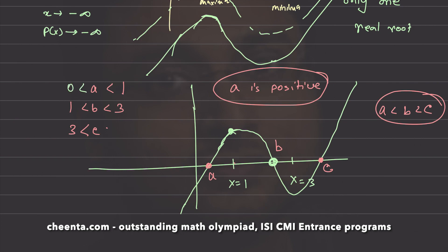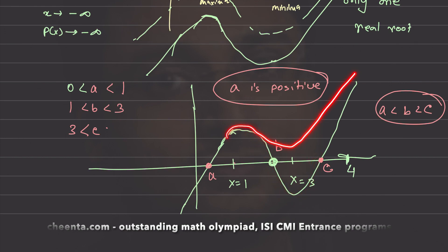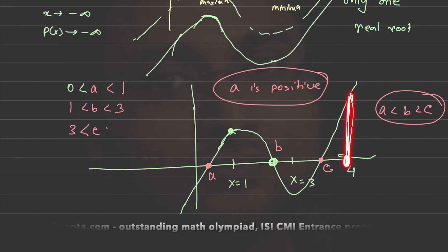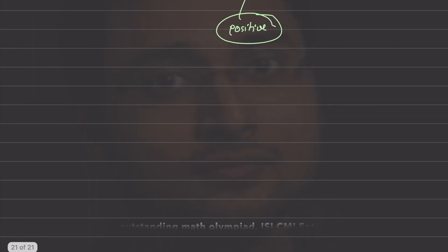The last thing we need to show is that c < 4. If we can show that p(4) > 0, then we are done. At x = 3 the polynomial is negative (it's a minima and must be below the x-axis since we have three distinct roots). So if p(4) > 0, by the intermediate value theorem there is a root between 3 and 4.